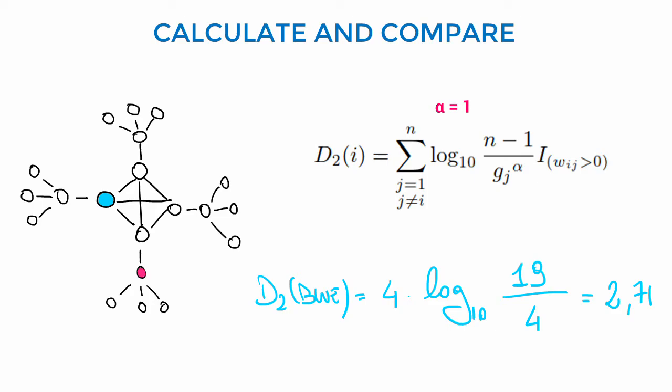and one node that is between the periphery and the core. All the neighbors of the blue node have degree equal to 4, so for D2 we have 4 times the logarithm of 19 divided by 4, which is the degree of the neighbors of the blue node. We get a score of distinctiveness centrality equal to 2.71.